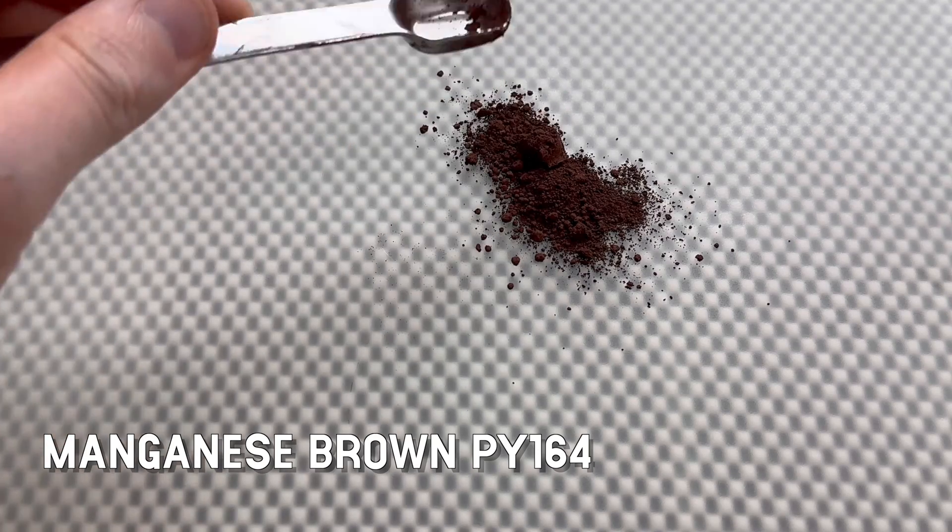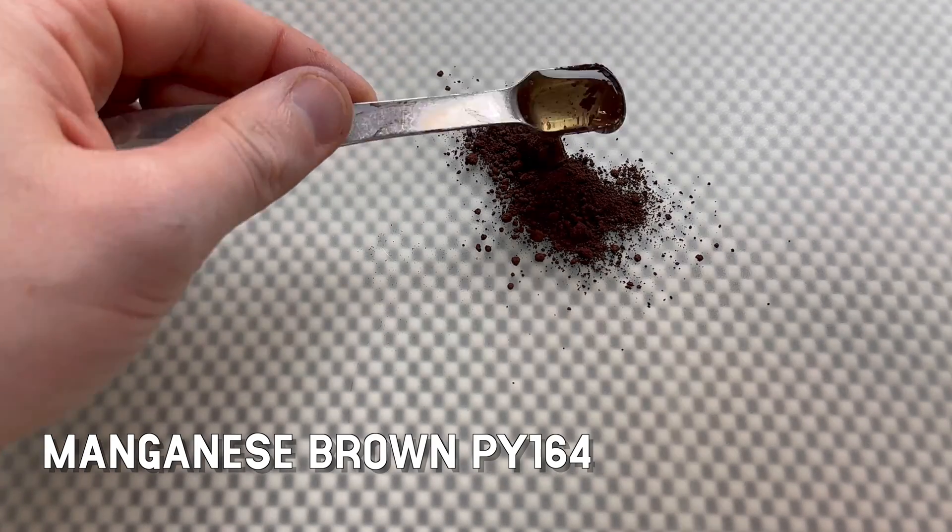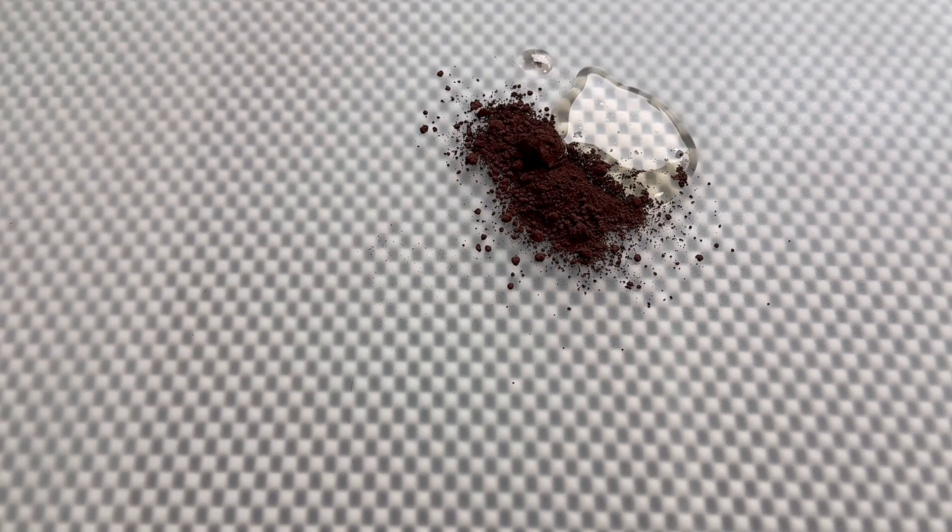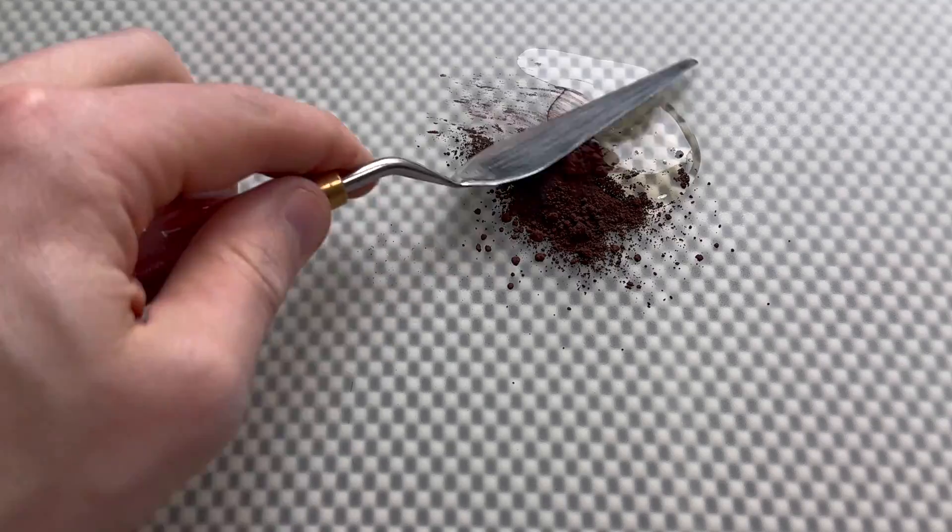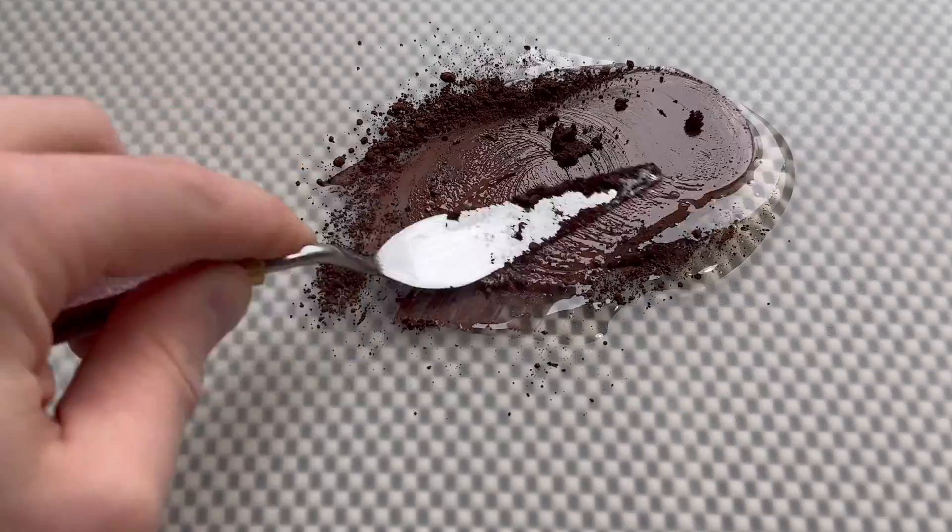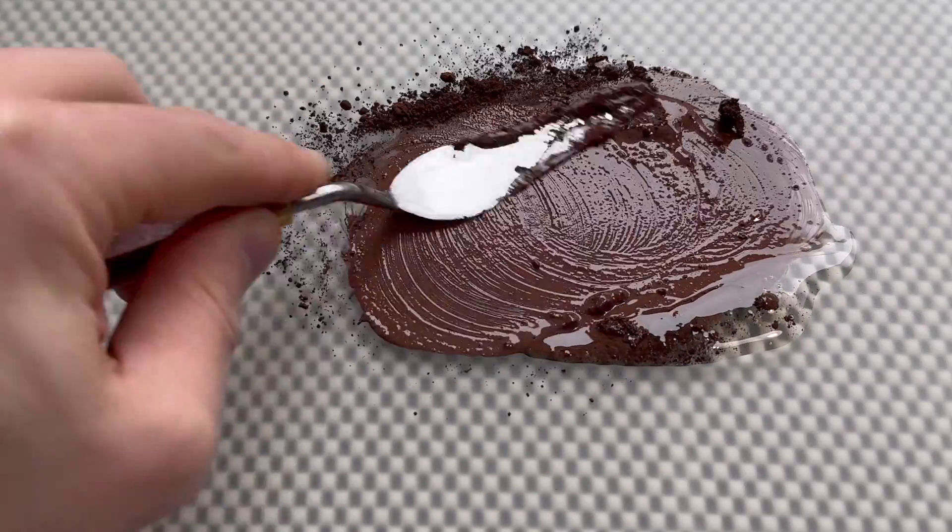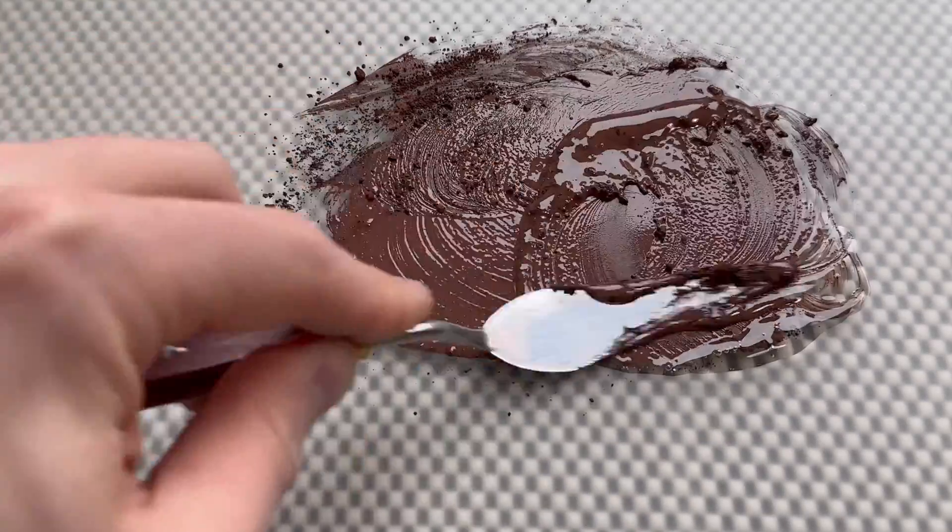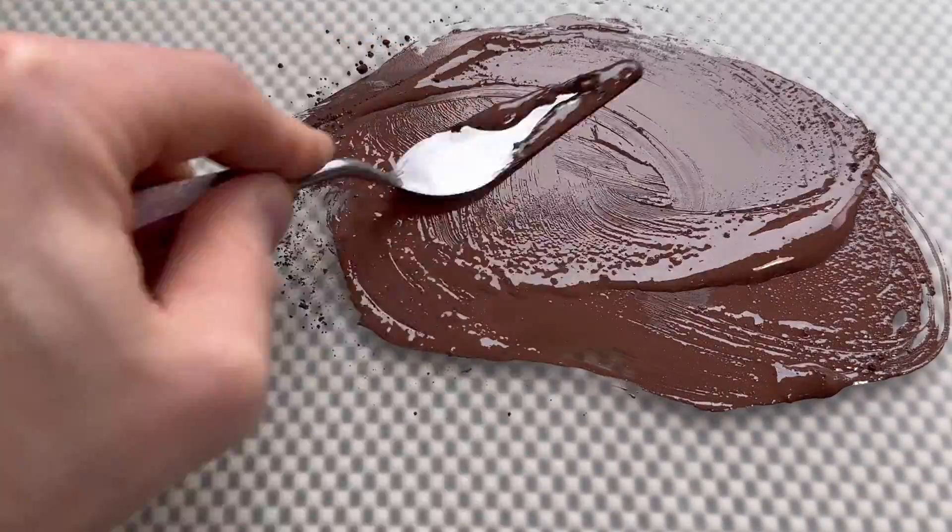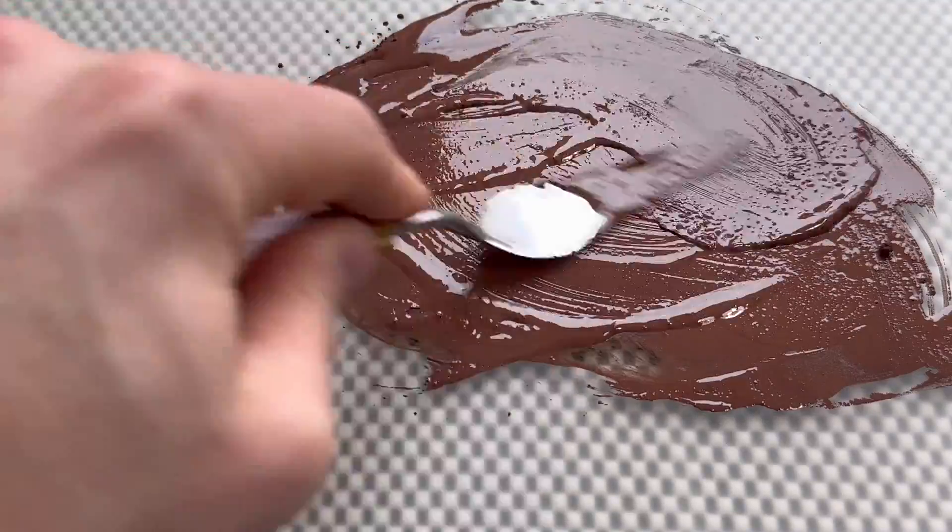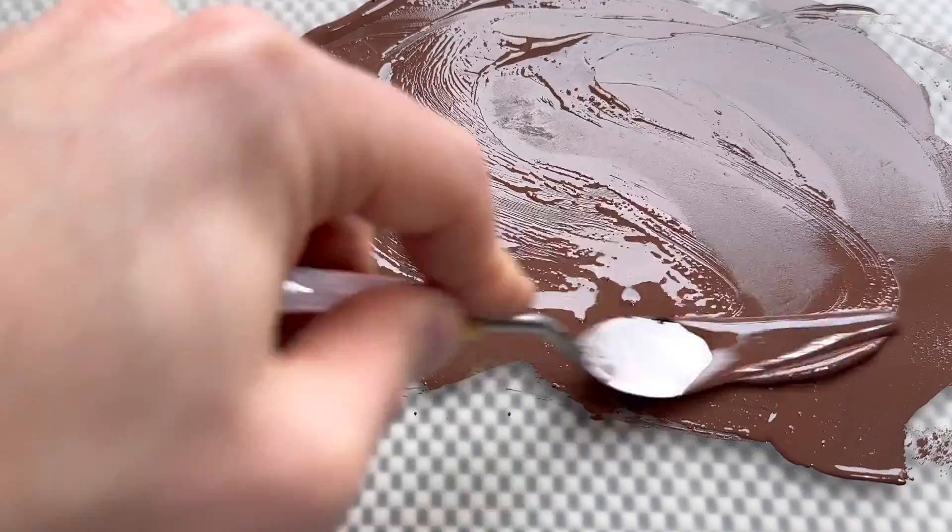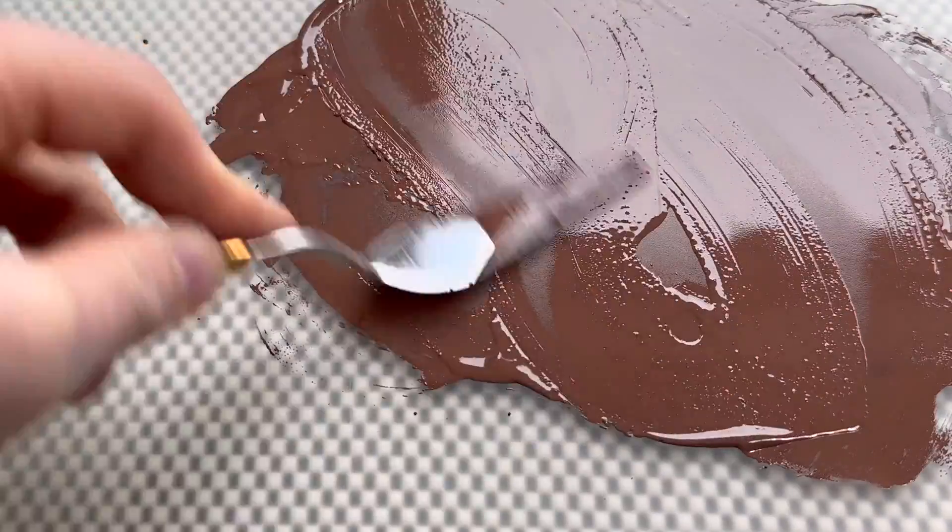Then we have PY164. Yes, it looks brown, but no, it's not a PBr, it is a PY. In my range of paint, this is what I call manganese brown. It is a much more recognizable brown than PBr8 was. The correct term for it would be manganese antimony titanium buff rutile, which makes more sense when we put titanium to the title.